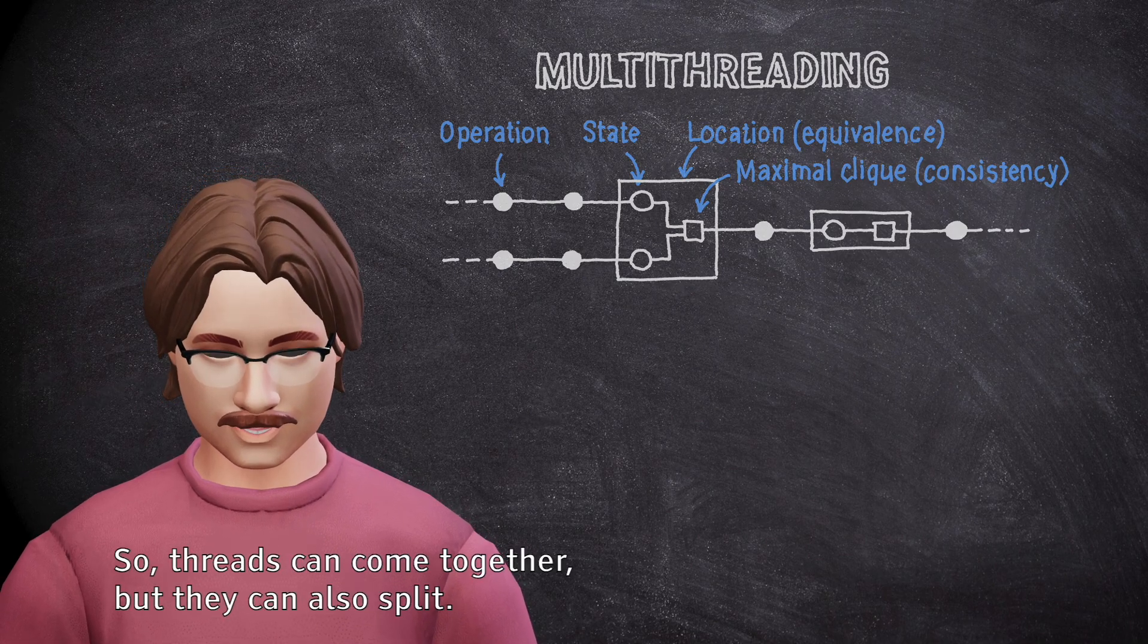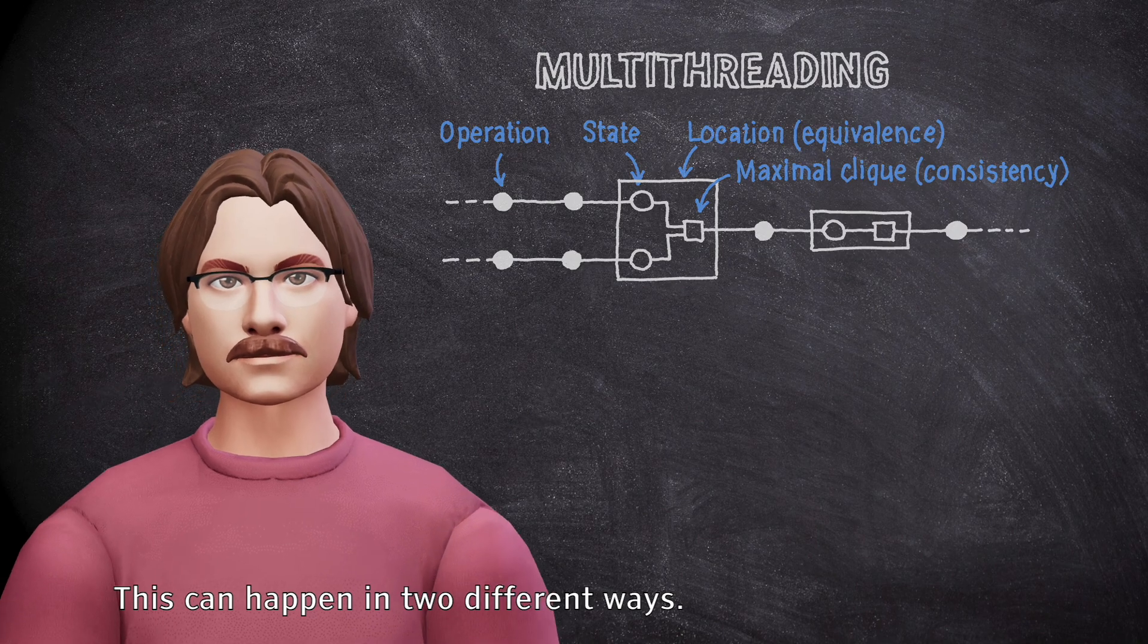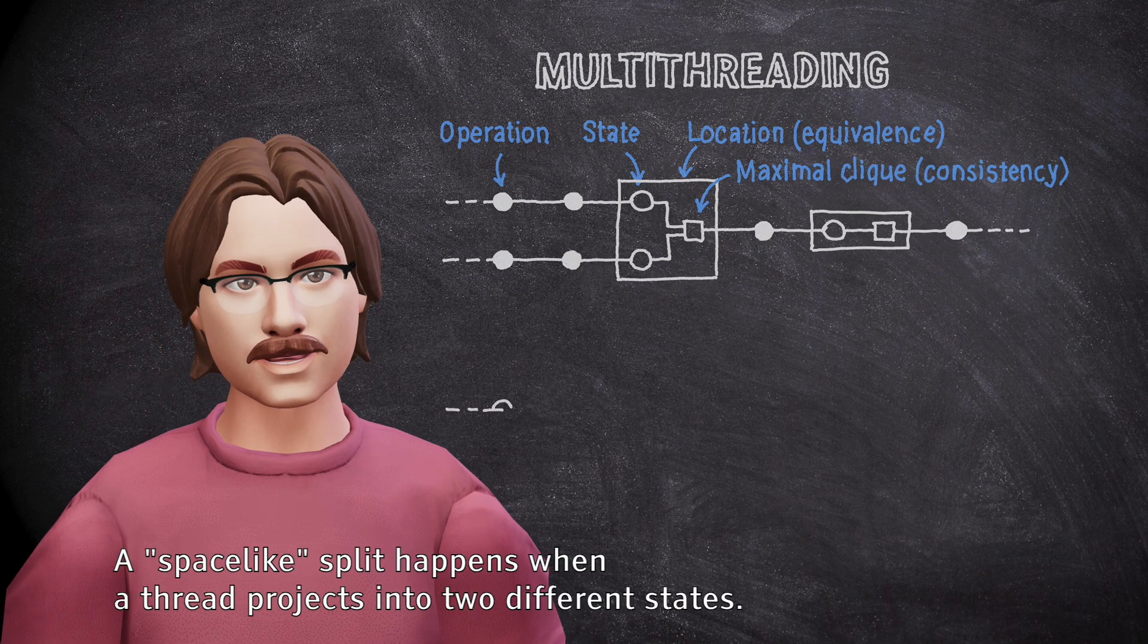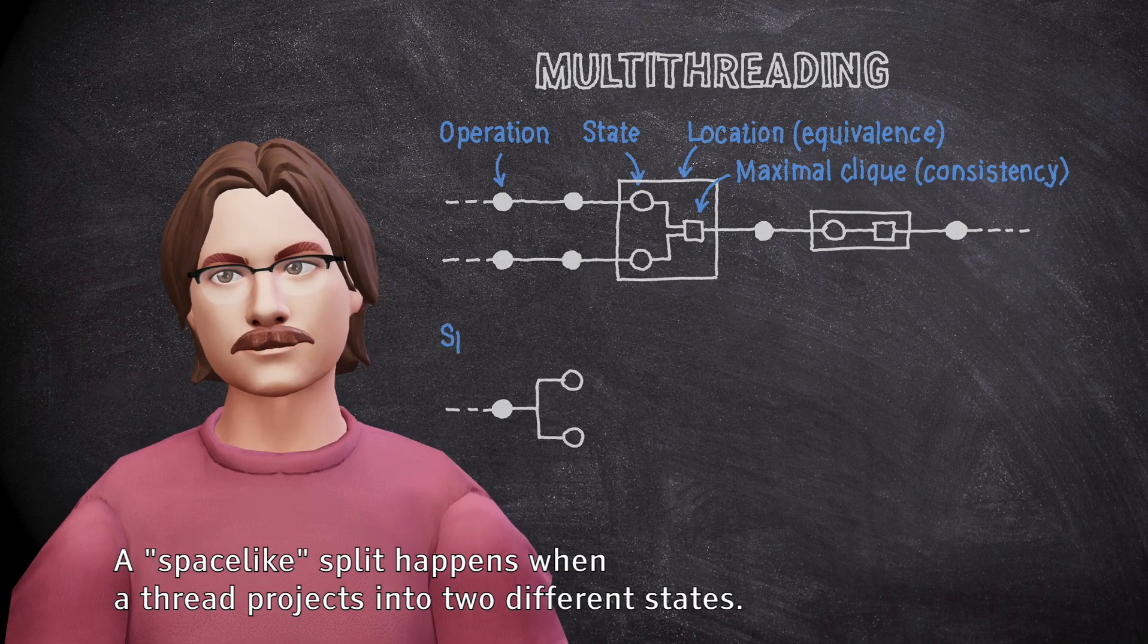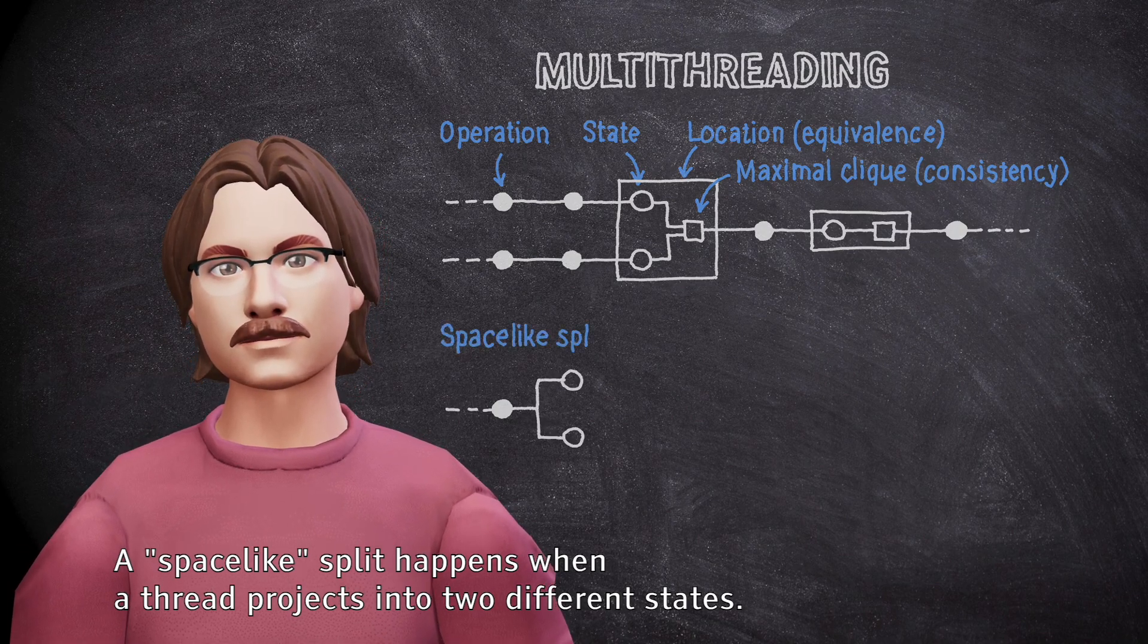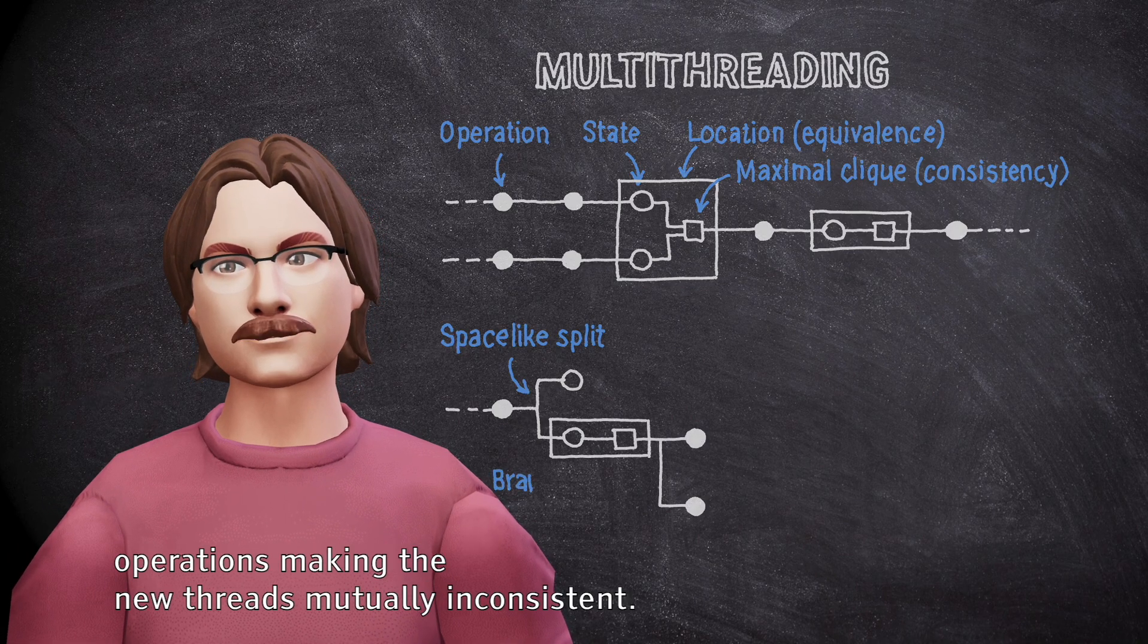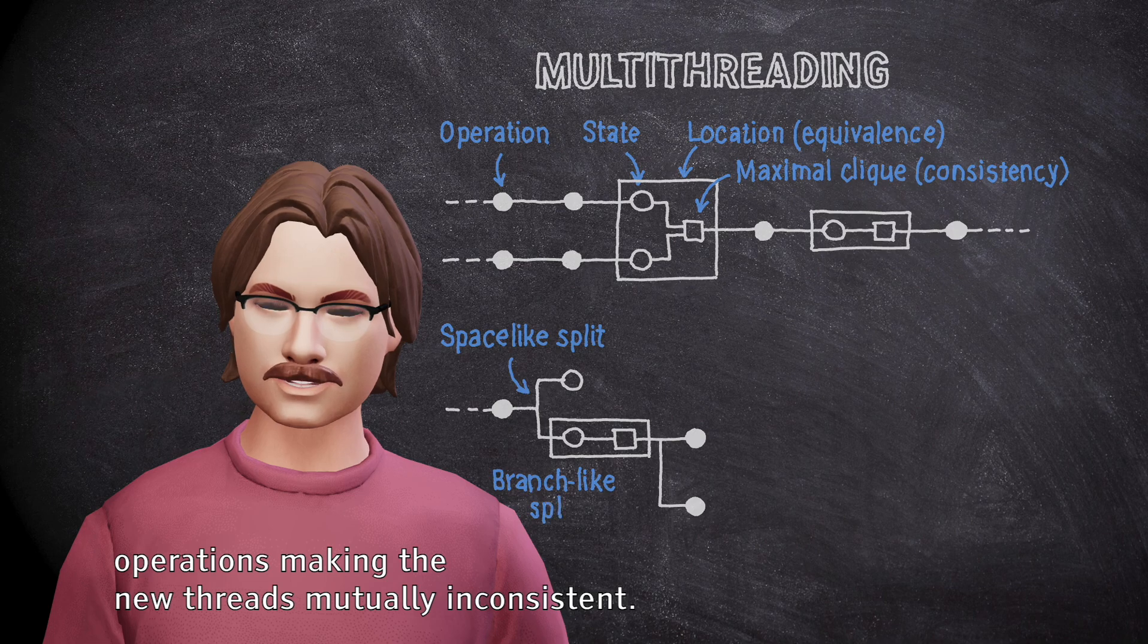So, threads can come together, but they can also split. This can happen in two different ways. A space-like split happens when a thread projects into two different states. A branch-like split happens when a clique is used by two different operations making the new threads mutually inconsistent.